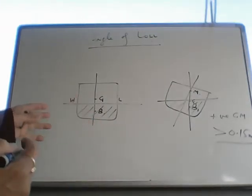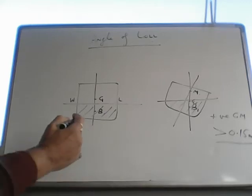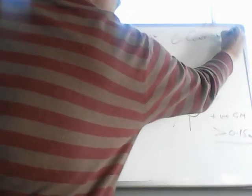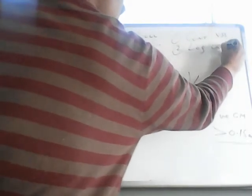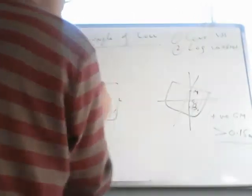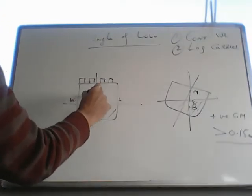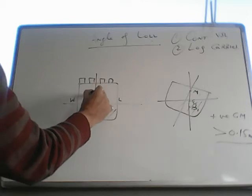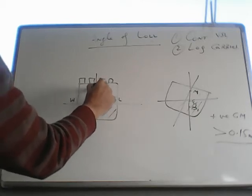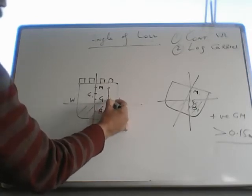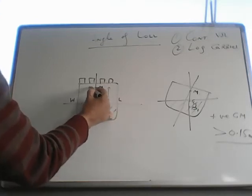Now if you are loading cargo, mostly deck cargo, for example on container vessels or log carriers - when you load deck cargo, the center of gravity of the ship moves up. So the GM reduces. Earlier this was the GM, now GM is reduced.